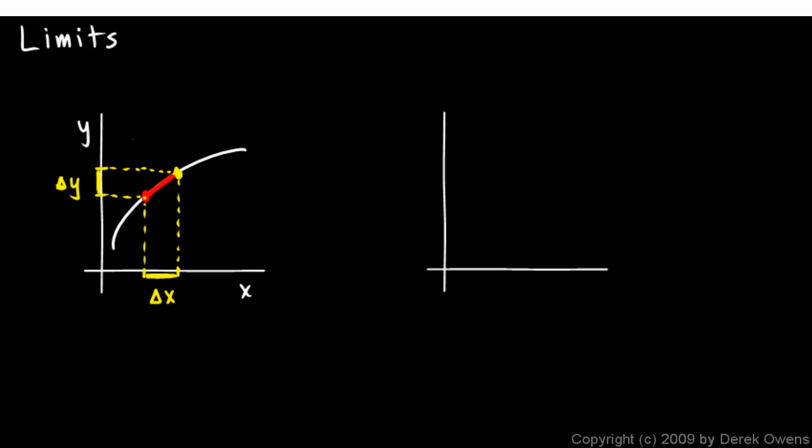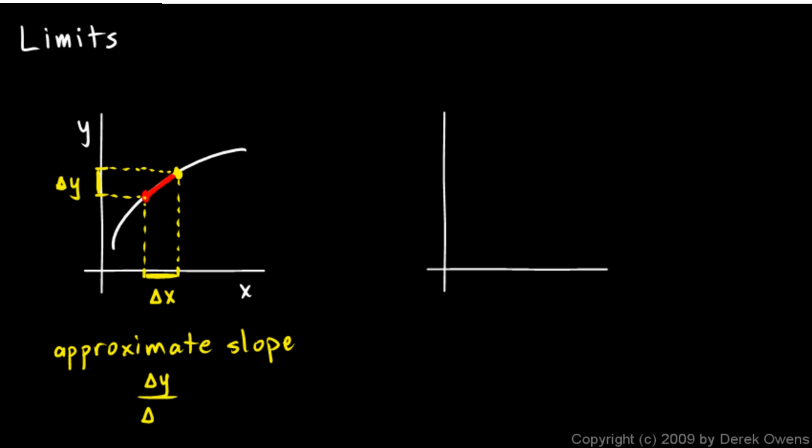And it's an approximate slope. The approximate slope is delta y over delta x. And it's pretty reasonable that that approximation is a good one if those intervals are really small, if the delta y and the delta x are really, really tiny.